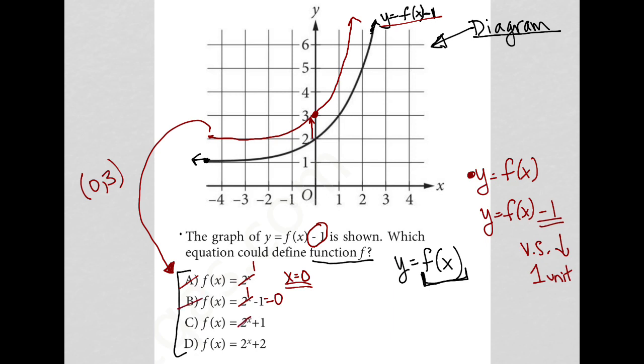Choice C, 2 to the 0 equals 1 again. 1 plus 1 is 2. So we're getting closer. So choice C is gone. And choice D, 2 to the 0 is 1. 1 plus 2 equals 3.